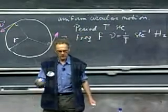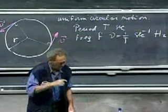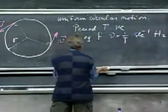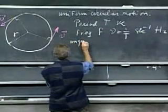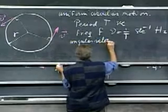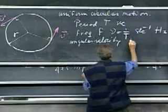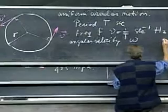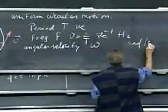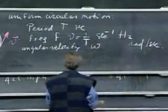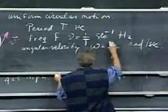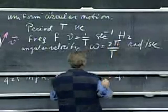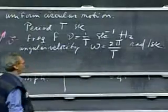Ten hertz means to go ten times around per second. And then we identify omega, the angular velocity, omega, which is in radians per second. Since it takes T seconds to go around two pi radians, omega is two pi divided by T.